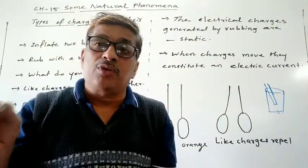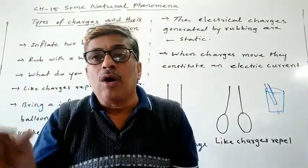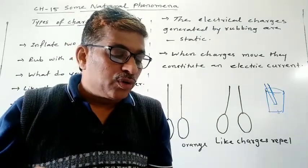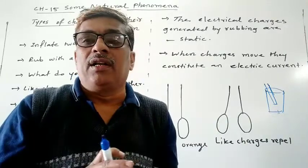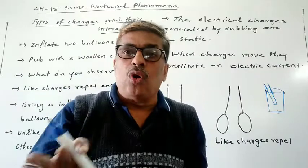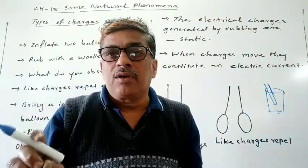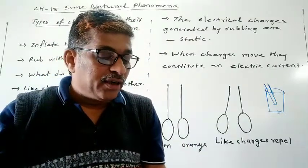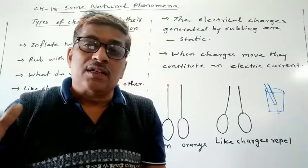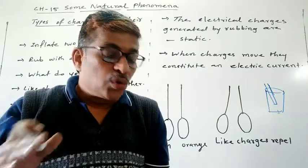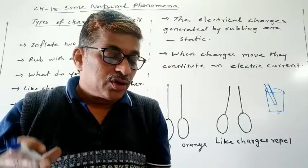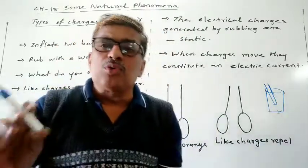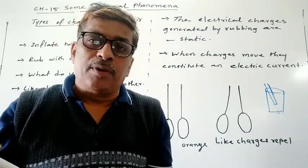You will observe the same result as with the magnets — when you bring like poles together, they move away from each other. In this activity, we brought close together charged objects made of the same material. The charged objects made of the same material show repulsion. They move away from each other. So, what happens if two charged objects are made of different materials? Let us find out.